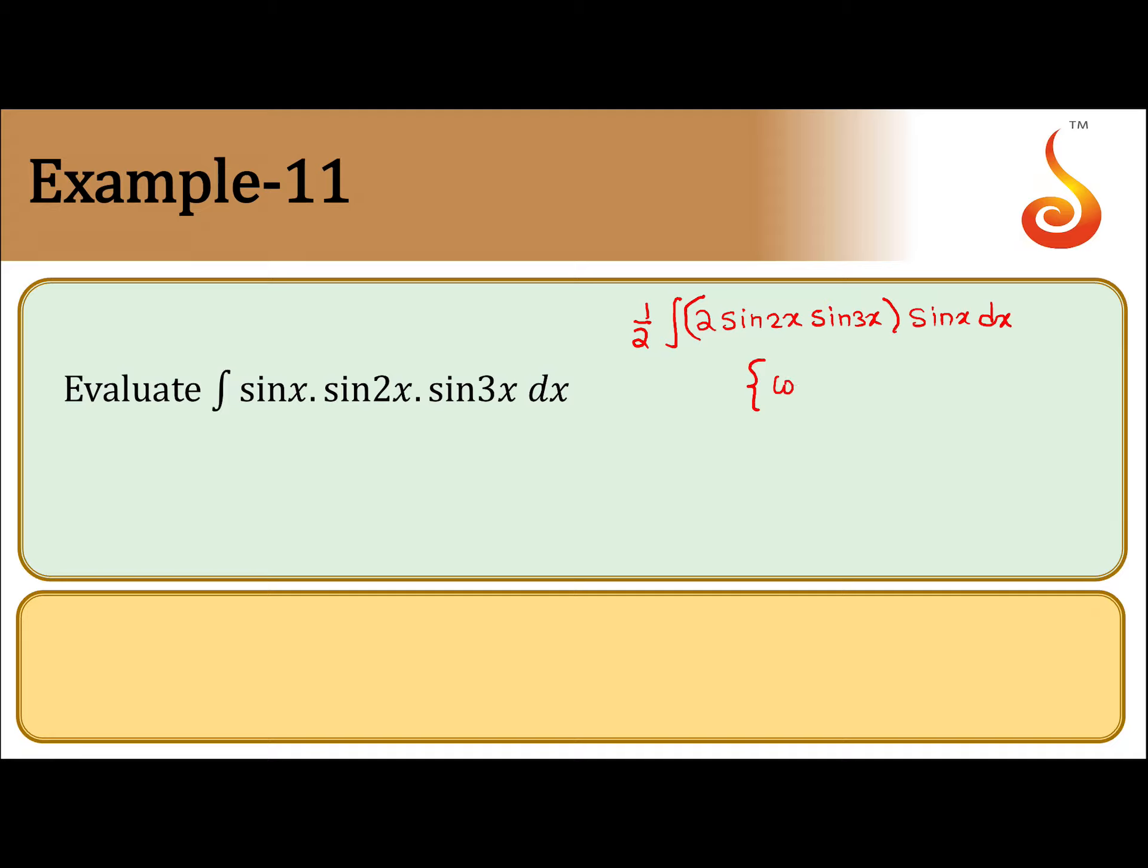I will put in a curly bracket: cos(A - B) minus cos(A + B) will give you 2 sin A sin B. Applying the same formula here, we get...